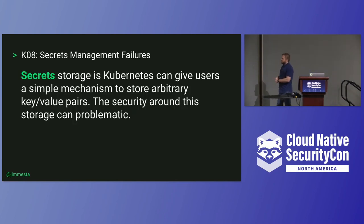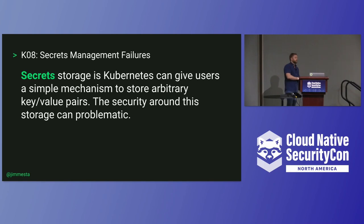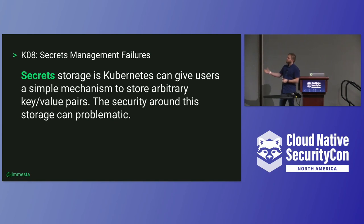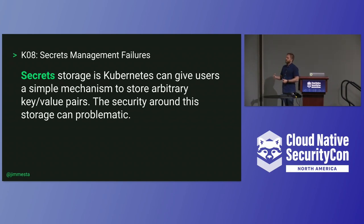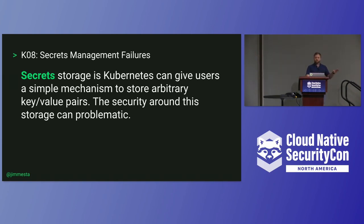Number eight: secret management. Secret storage is a highly debated topic. Using the Kubernetes secret object is certainly possible — we all know those secrets are base64 encoded and shoved into etcd. That may be fine for your threat model, but you have to rely on RBAC to stop access to those secrets. Mixing too many critical things like secrets in the cluster and then failing at your RBAC story can give the world access to those secrets. You can use other mechanisms such as KMS or HashiCorp Vault — whatever it may be, you need a strong cross-cluster standard.